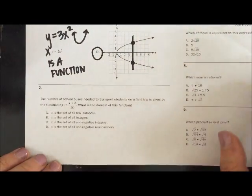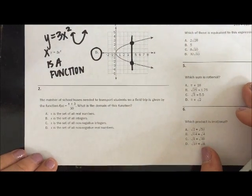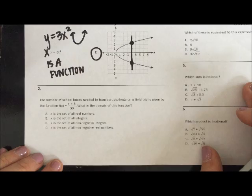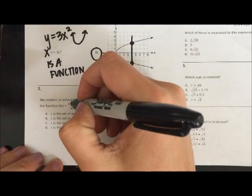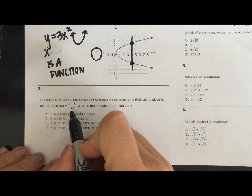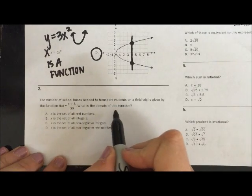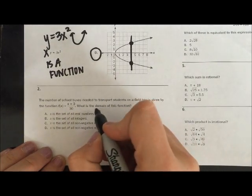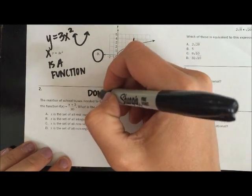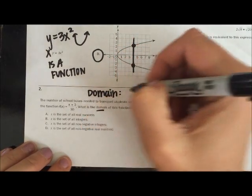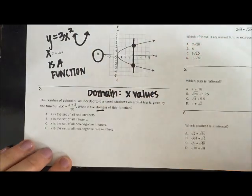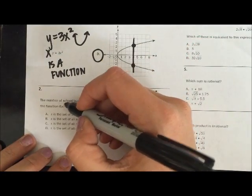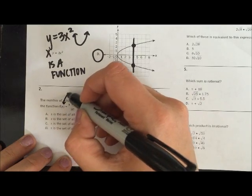Number two. The number of school buses needed to transport students on a field trip is given by the function f(x) equals the quantity of x plus 3 divided by 30. What is the domain of the function? So let's remember what is domain. We need to remember that domain are our x values. We're talking about the value of this part. This right here, remember, is y.